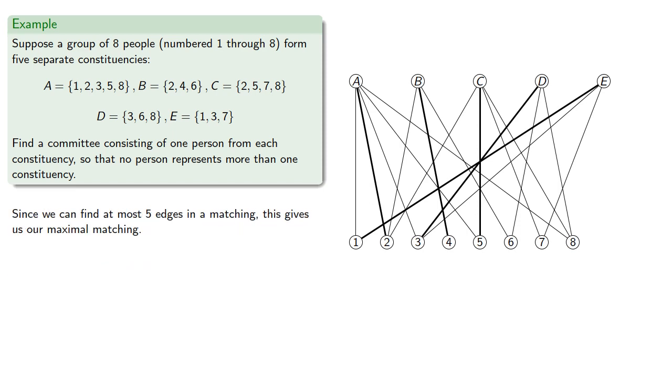Since we can find at most 5 edges in a matching, because that's the number of groups that we have, this gives us our maximal matching, and this, in turn, gives us our representatives: for group A, person 2; for group B, person 4; for group C, person 5; for group D, person 3; and for group E, person 1.